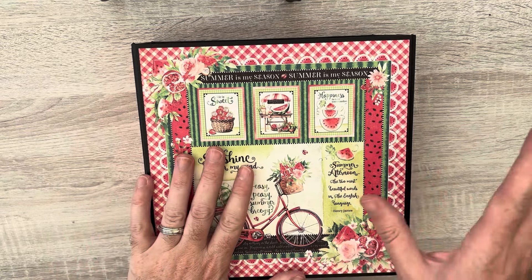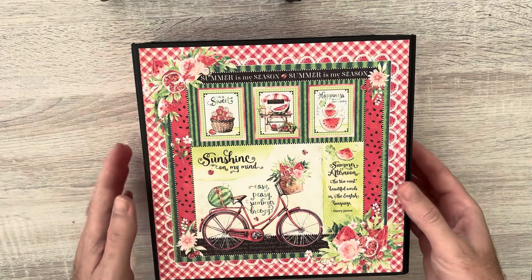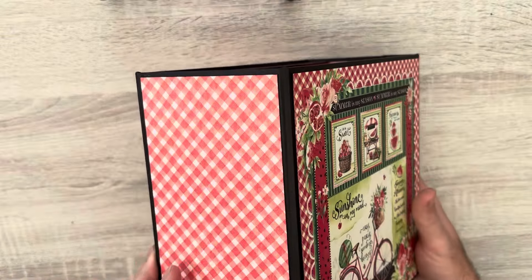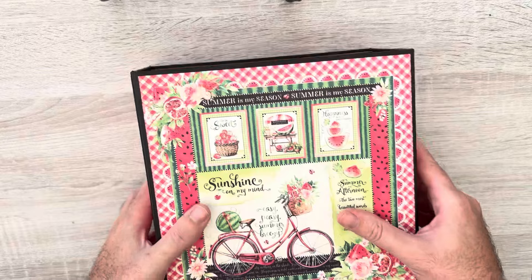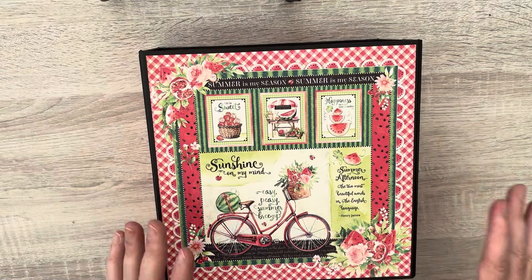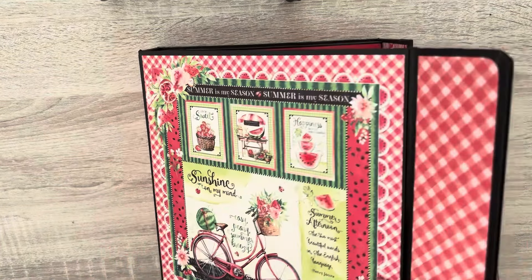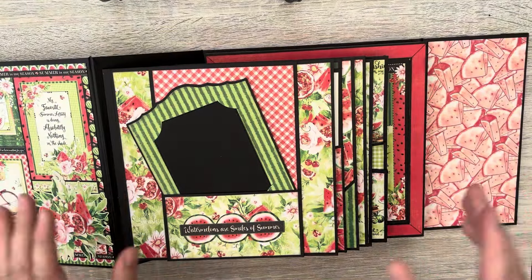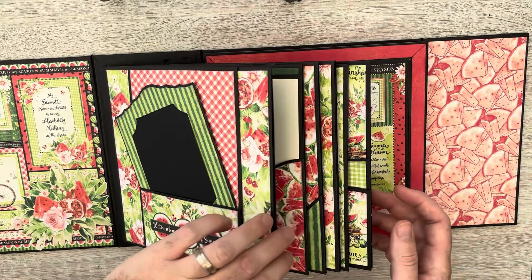So I've been working on this Somewhere on My Mind album. The papers are from Graphic 45 and the kit itself is from Cool Cats Crafts, it's the frame album and there is a walkthrough of this that you may have already seen.